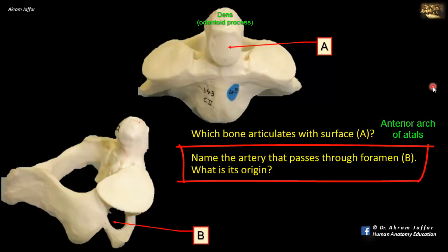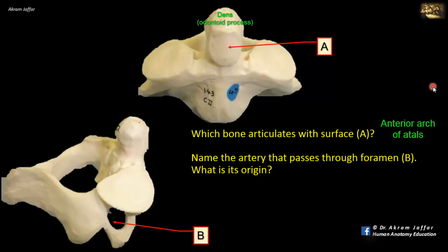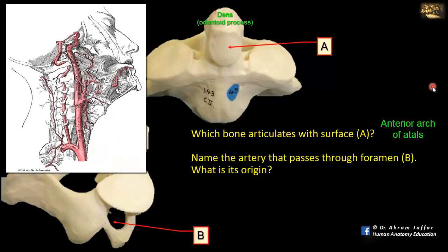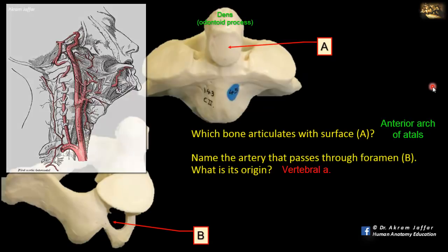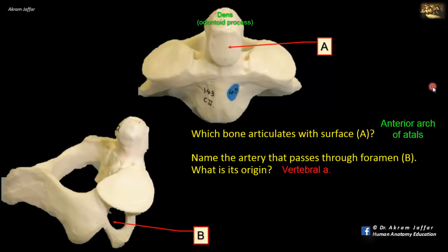Name the artery that passes through foramen B and its origin. This is a foramen in the transverse process of a vertebra, called the foramen transversarium, a typical feature of all cervical vertebrae. It allows passage of the vertebral vein, and from C6 up to C1, the foramen transversarium allows passage of the vertebral artery. The vertebral artery is a branch of the subclavian artery. It passes through the foramen transversarium of C6, ascends through the others, then enters the cranial cavity through the foramen magnum, providing a second source of blood supply to the brain alongside the internal carotid artery.